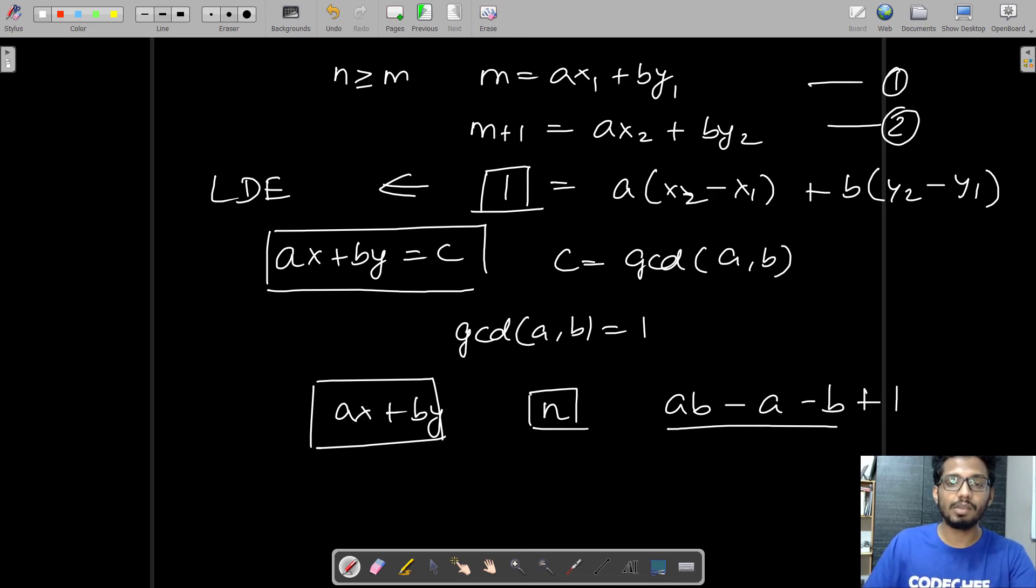So the flow of approach will be: first, we check if gcd(a, b) equals 1. If that is true, we print ab - a - b + 1 as our answer. Otherwise, we print -1. I hope you understood this approach. Now let's quickly move on to the C++ code and submit it on CodeChef.